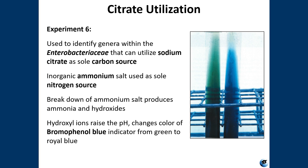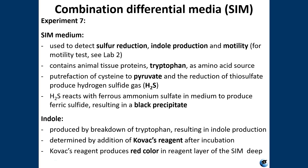Experiment six is the citrate test, designed to identify specific genera within the Enterobacteriaceae that can utilize sodium citrate as their sole carbon source, using the enzyme citrate permease to transport citrate into the cell and metabolize it via the fermentative pathway. Inorganic ammonium salt is used as the sole nitrogen source; bacteria break down the ammonium salt and produce ammonia and hydroxide ions, which raise the pH. The indicator bromophenol blue starts out green at low pH and turns royal blue at high pH — royal blue is a positive citrate test.